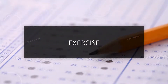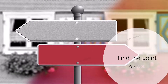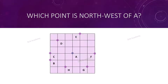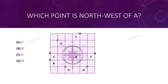Now let us start with our exercise. Question 1: Find the point. Which point is northwest of A? Observe the grid and the points given. Point A is in the middle. Find the point which is northwest of A. Options: A is G, B is B, C is E, D is D. Draw the compass rose as shown — you will get the answer as Option D.